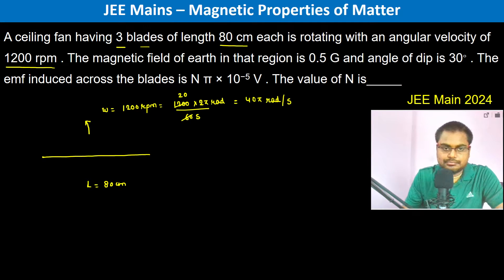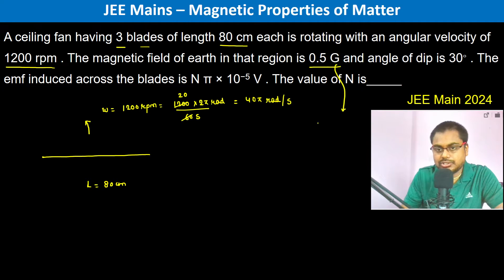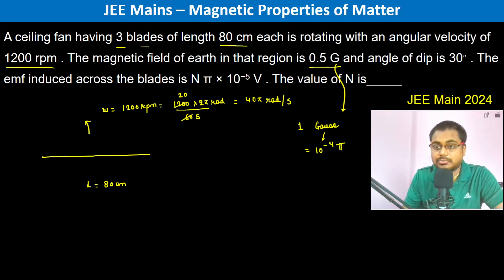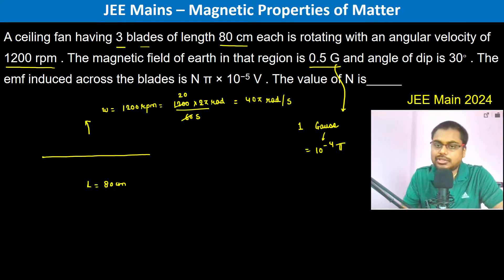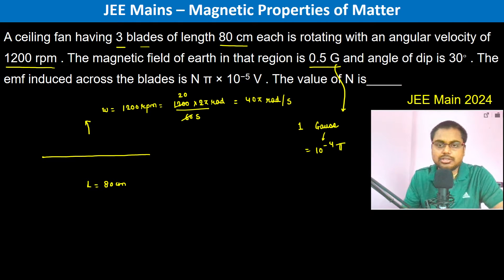The magnetic field of Earth in that region is 0.5 gauss. Now, g here stands for gauss, and 1 gauss is equal to 10 to the power minus 4 tesla. This has to be remembered, since it is asked in JEE in 2024, so they want us to remember this as a standard unit.